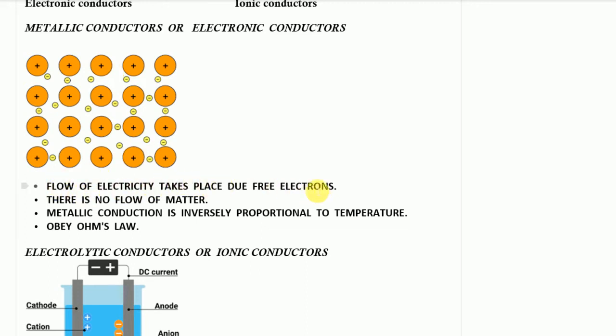The flow of electricity takes place due to the free electrons. When connected to a battery, the electrons move through the metallic conductor, allowing the flow of electricity. In metallic conductors there is no flow of matter — the metal ions stay at their constant positions and only the free electrons move.